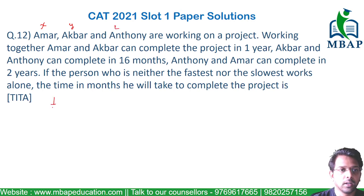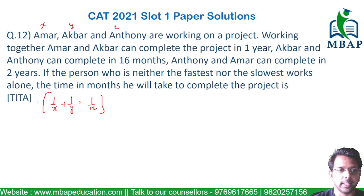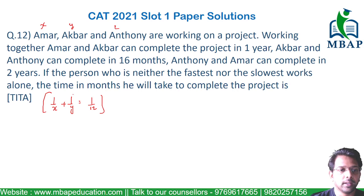Now, the question says on the first condition: Ammar and Akbar working together are able to complete the work in 12 months. So in one month, both of them will cover 1/12 of the whole work. Similarly, Akbar and Anthony — that is 1/Y plus 1/Z — equals 1/16.